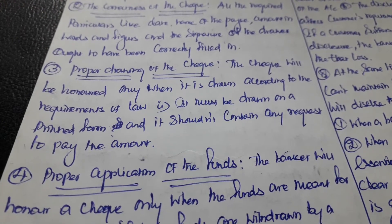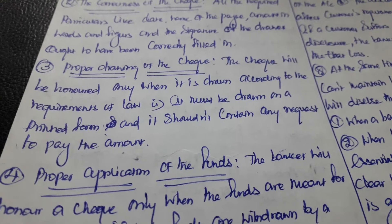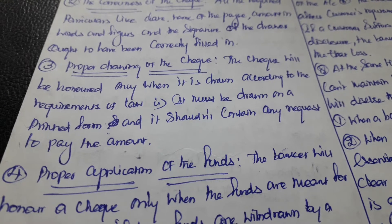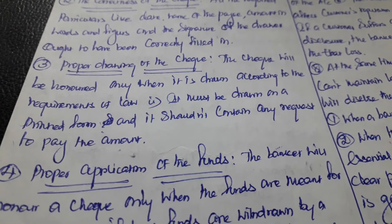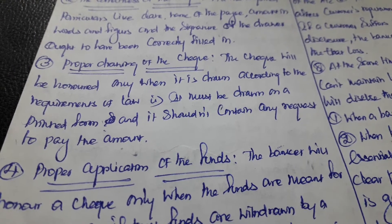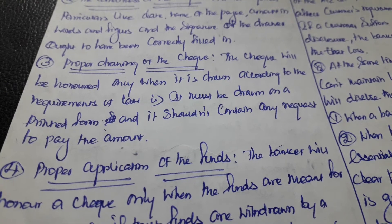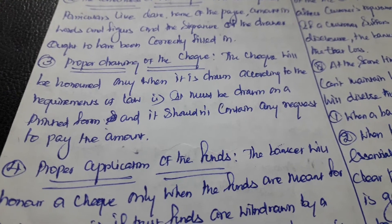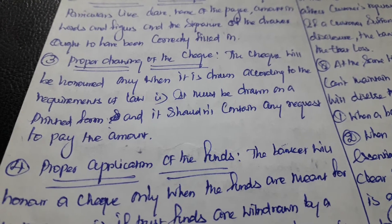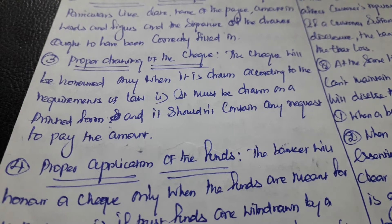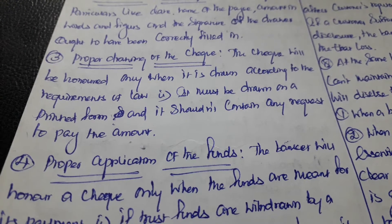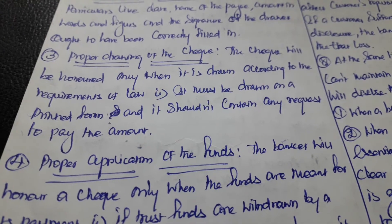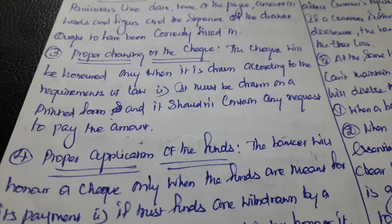The third obligation is the proper drawing of the check. The check will be honored only when it is drawn according to the requirements of law — it should be drawn in the correct format. It must be drawn on a printed form provided by the bank to the customer, and it should not contain any request; it requires an order to pay the amount. The customer should order the banker to pay the amount — it should not be in the form of a request.